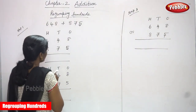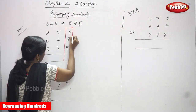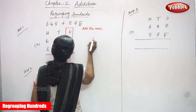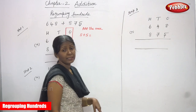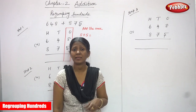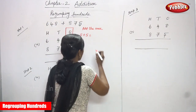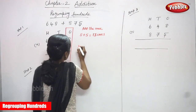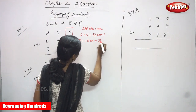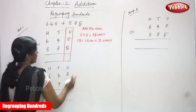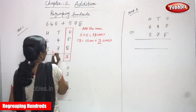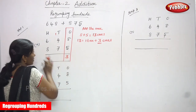First we have to concentrate on the ones place as usual. So I highlight the ones space. Now add the ones: 8 plus 5. Keep 8 in the mind and count 5 fingers after 8 — that gives 13. So 13 ones. That is 10 plus 3, so 3 ones here, and the 10 is carried over to the tens place. So I write 1 in the tens place as the carryover. Step 1 is over.